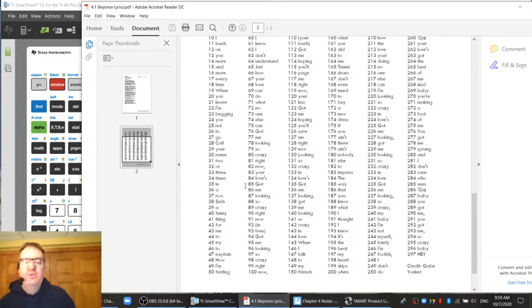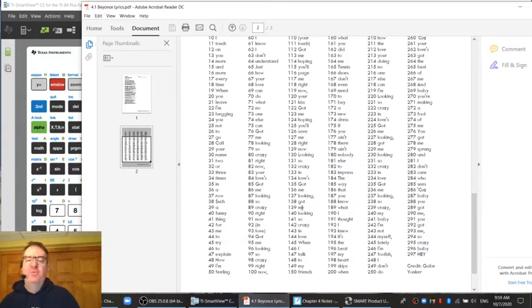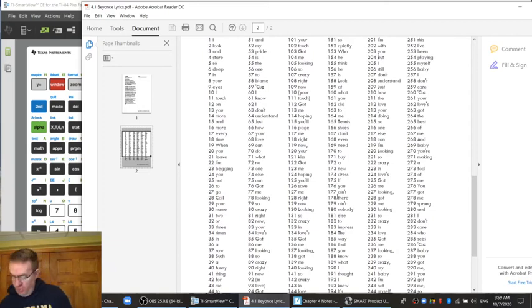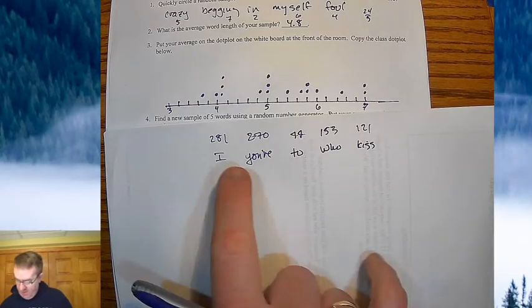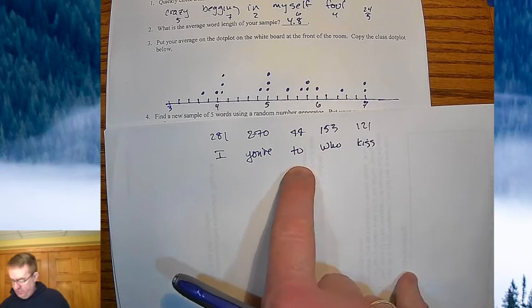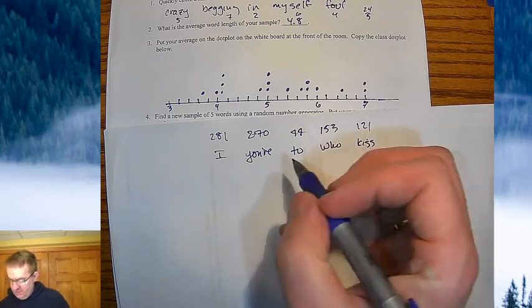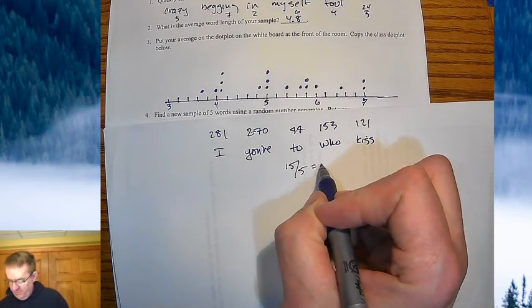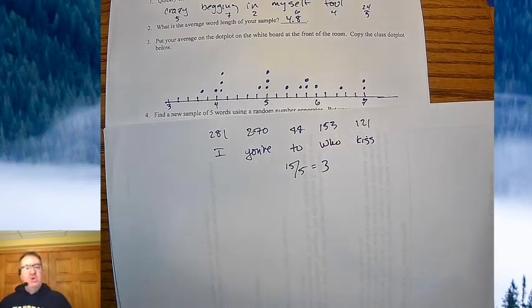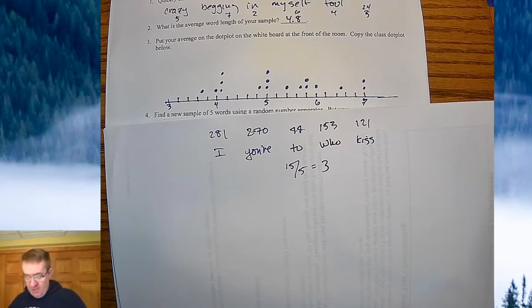So 281 is I. Ooh, that's a short one. 270 is your. Are compound words really a single word? Questions for your English teacher, just for fun. Two, 153, who, and 121 is KISS. So then you would say, okay, I'm going to average those. So I've got one, five, two, that would be eight, 11, 15. So I've got 15 divided by five. So my average number would be three. So the whole class would go through and do this. And my data from last year looks like this.